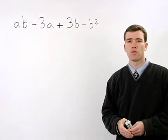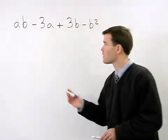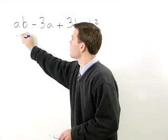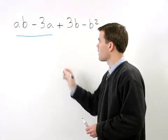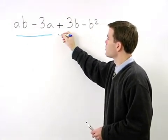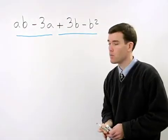To factor this problem, we can group the first two terms together, AB minus 3A, and the last two terms together, positive 3B minus B squared.